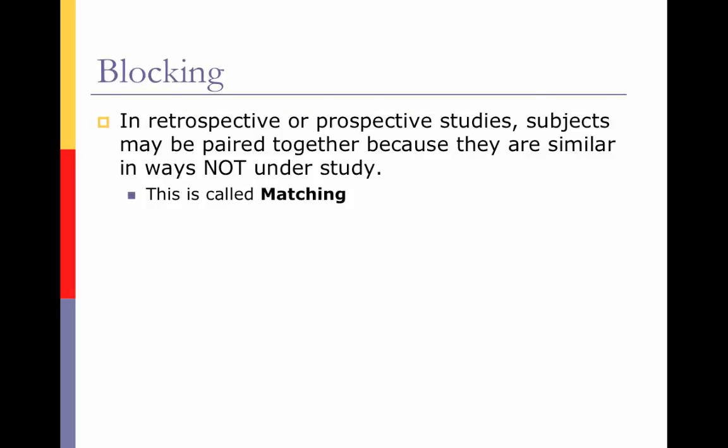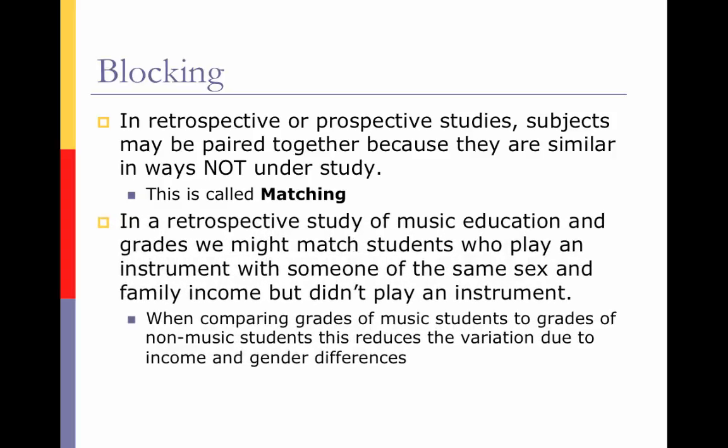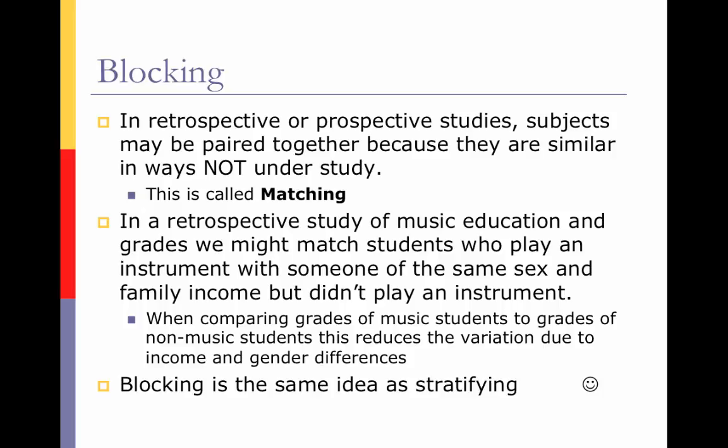In retrospective or prospective studies, subjects may be paired together because they are similar in ways not under study. This is called matching. We still use the same idea in observational studies — it's just a matching situation instead of a blocking situation. For example, in a retrospective study of music education and grades, we may match students who play an instrument with someone of the same sex and family income who doesn't play an instrument. This reduces variation due to gender differences or income when comparing grades of music students to non-music students. Blocking and matching are essentially the same idea as stratifying.